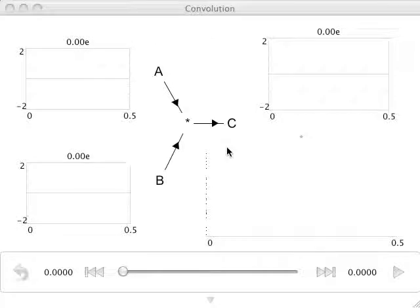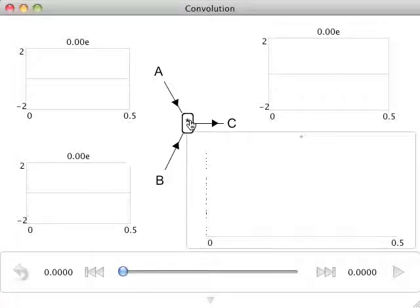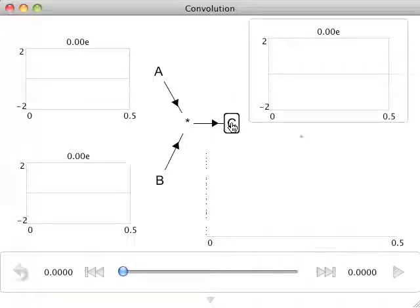This network computes the circular convolution between two 10-dimensional vectors. One vector is projected out of population A, the other out of population B. They go to a subnetwork denoted here with a star, and the result of the convolution goes to population C.